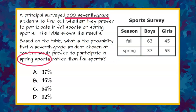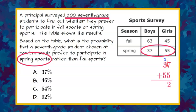Now we're asked based on the table which ones prefer the spring sports. So we're going to come over and add those values. For spring sports, the total of students boys and girls was 37 plus 55. 7 plus 5 is 12, carry the 1. 3 plus 5 plus 1 is 9. So 92 students picked spring over fall. We now know that 92 out of the 200 students prefer to play spring sports.